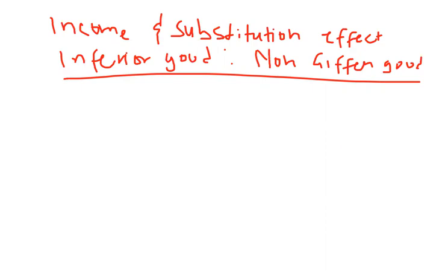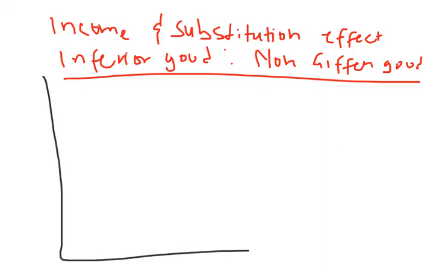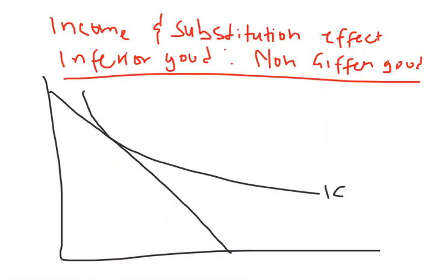I'll start off by drawing my diagram. This is my budget constraint. This is my optimum and this is my indifference curve IC0. So this is my optimum, x1 and x2 on the axes.